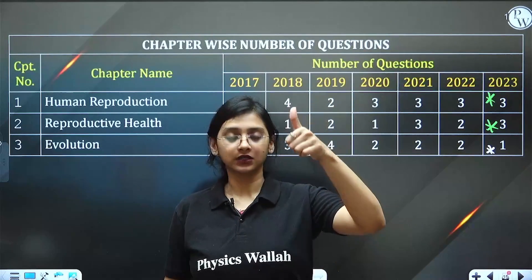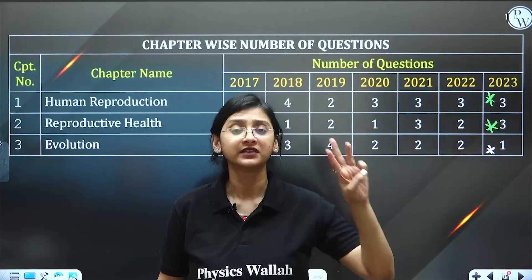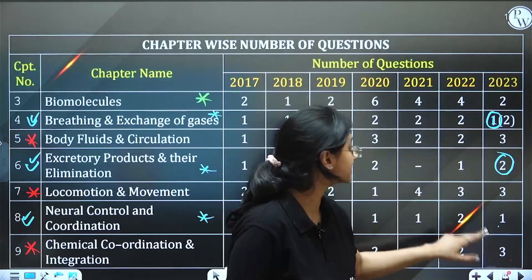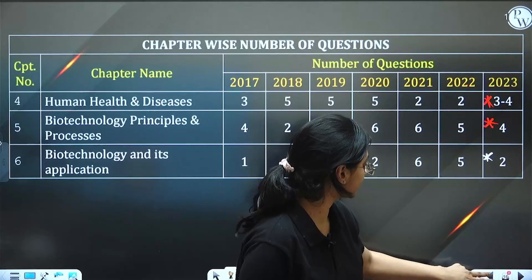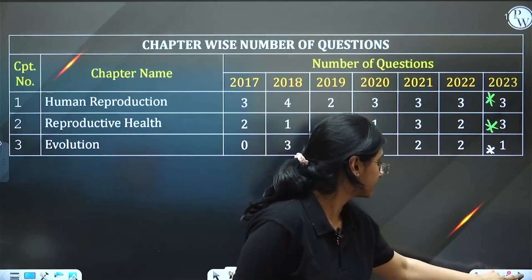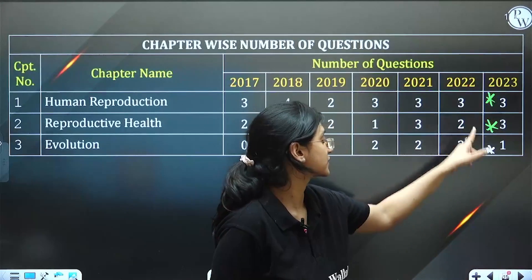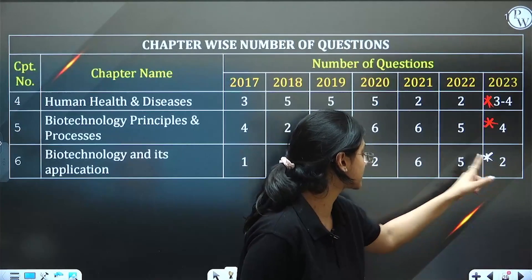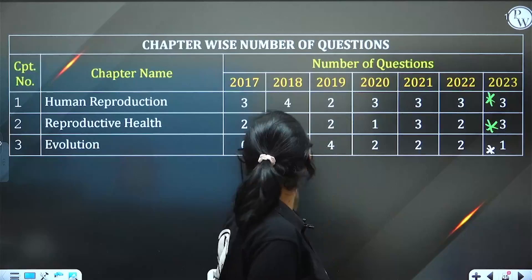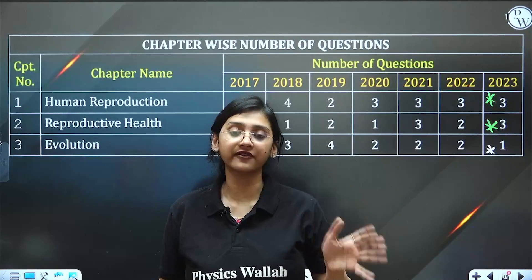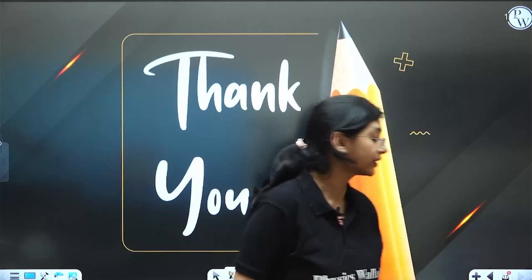The next important chapters for Class 12 are Human Reproduction and Reproductive Health — three questions can be expected. So the first priority is Human Health and Diseases plus Biotechnology Principles and Processes, the second priority is these two reproductive chapters, the third priority is Biotechnology and Its Applications with one to two questions, and the least important is Evolution, from which just one question was asked last year.